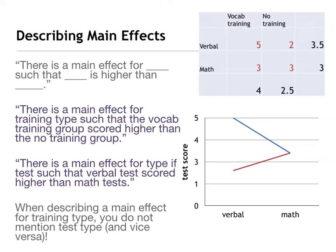When you look at this graph, you can see straight off the bat there's an interaction — the lines are not parallel, they're converging. If it's converging, diverging, or crossing, we know we have an interaction. We can see something different is going on. When we talk about the interaction, we're going to talk about both independent variables. Verbal and math are across the bottom. The blue line is our vocabulary training scores, and the red line is our no training scores.